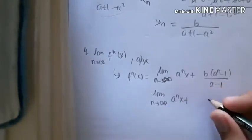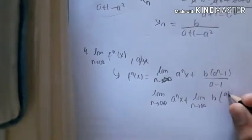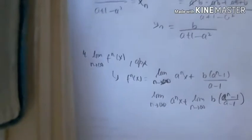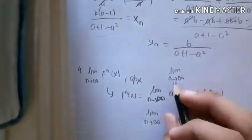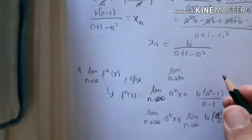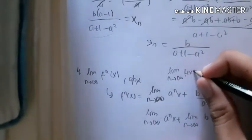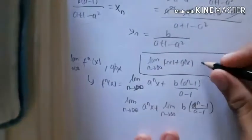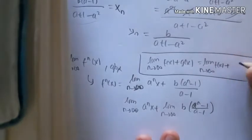So limit as n→∞ of a^(nx) plus limit as n→∞ of b(a^n - 1)/(a - 1). The property you should remember - the property of limits - whatever the limit is, whether approaching zero, three, or infinity, if we have this kind of equation you can separate it in this form. That way you can ease your calculation.